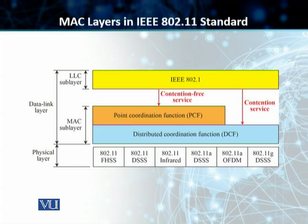We also have an LLC sublayer in the data link part, and at the bottom we have a physical layer which consists of all the different 802.11 standards for frequency hopping spread spectrum, direct sequence spread spectrum, infrared, OFDM, and 802.11g and so on.